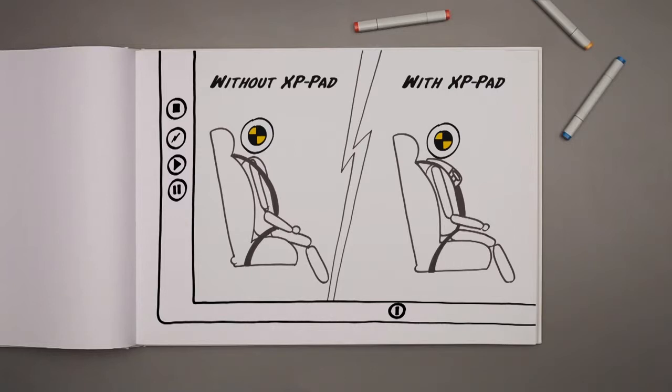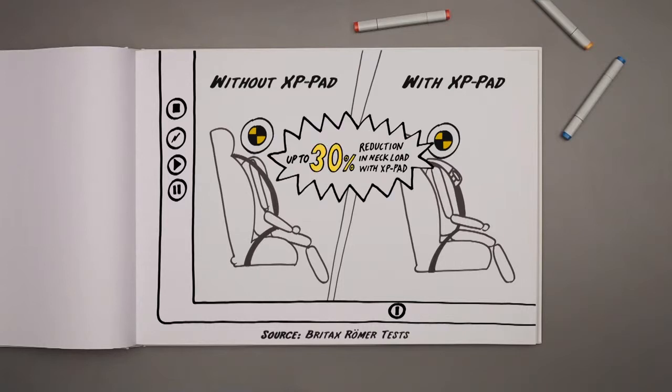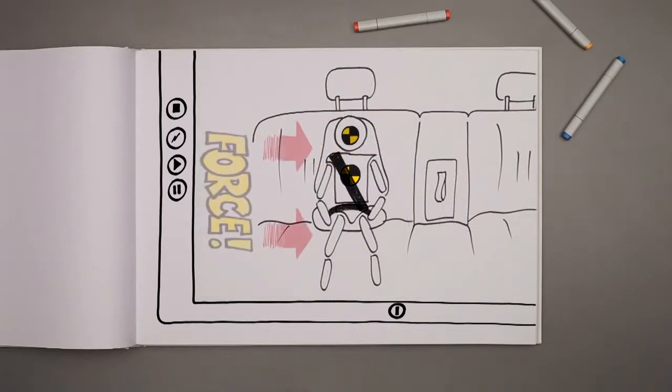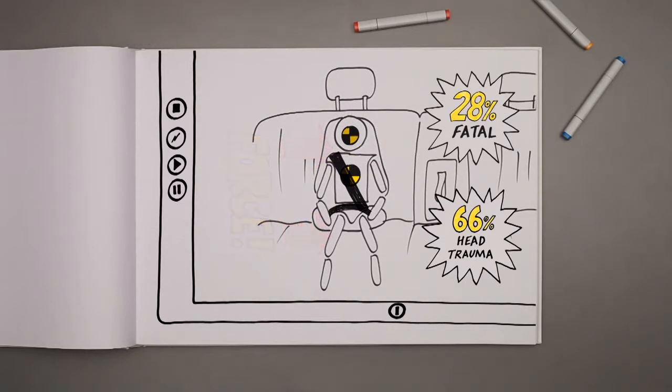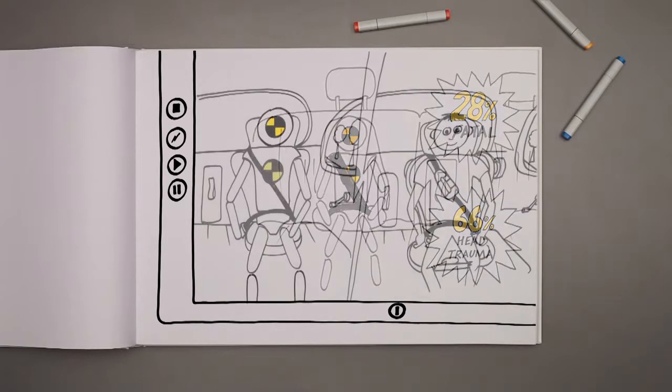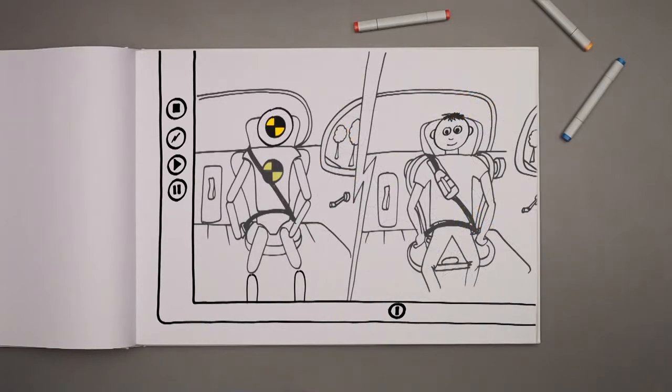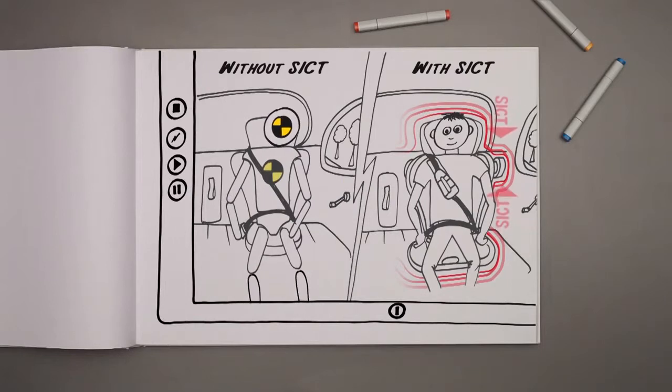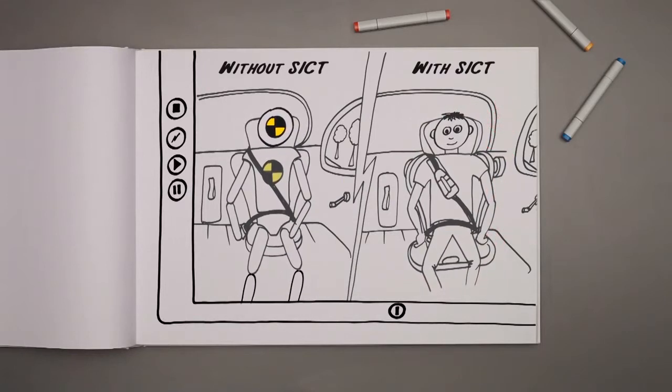It can help to reduce neck load in frontal crashes by up to 30%. Then they turned to side impacts, the second most common impact area in a crash, and improved our side impact cushion technology, SICT, even further. XP-6 now provides extra protection using an advanced cushion technology that is designed to absorb energy in a side impact, and because it minimizes the distance between the car door and seat.